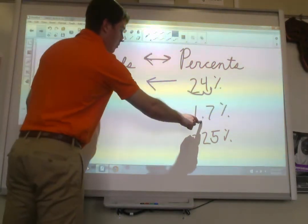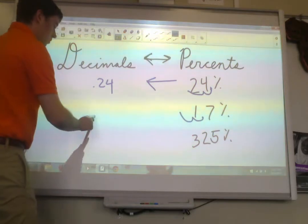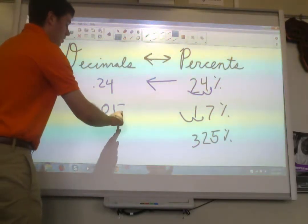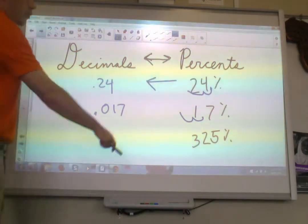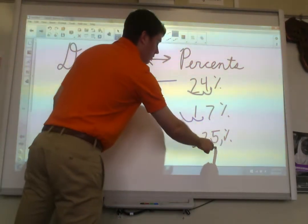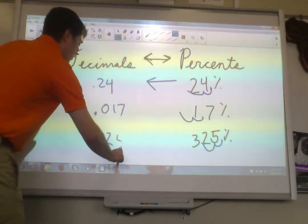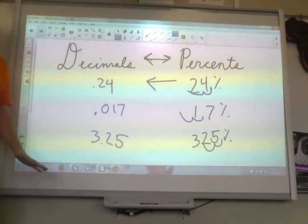1.7% becomes, point, and once again, we're going to have to add in our own zero. 0, 1, 7. And 325% becomes 3.25. Okay, so that's the easiest part.